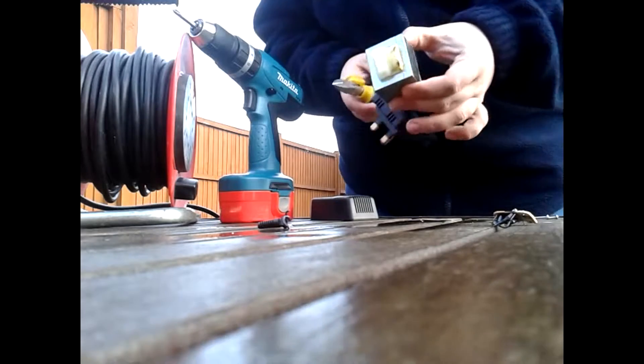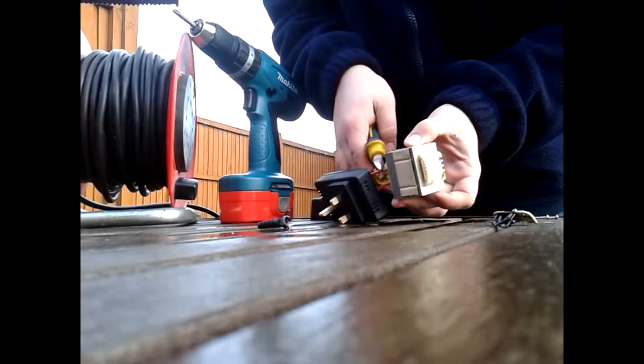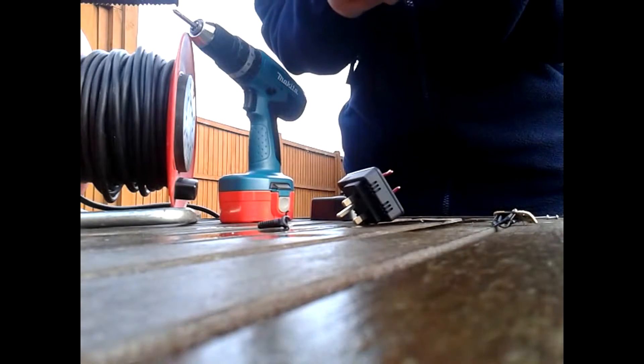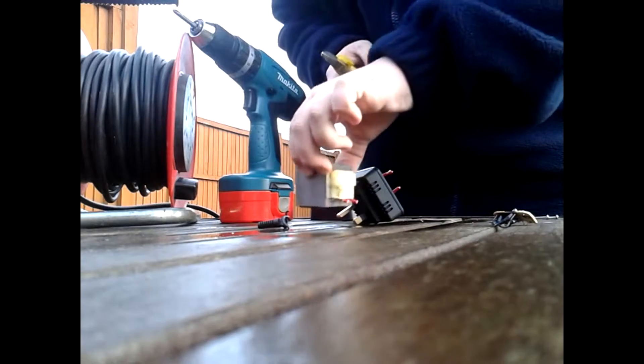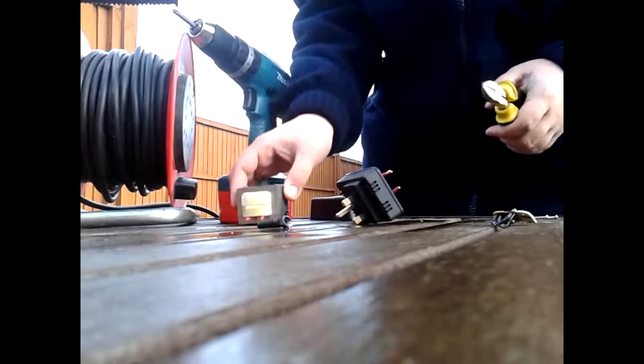Lovely jubbly. It's got two wires here. Let's snip them off. There. Aluminum. Nice heavy big transformer.